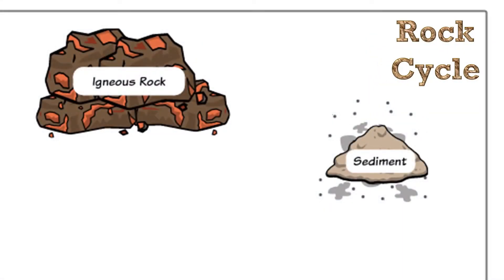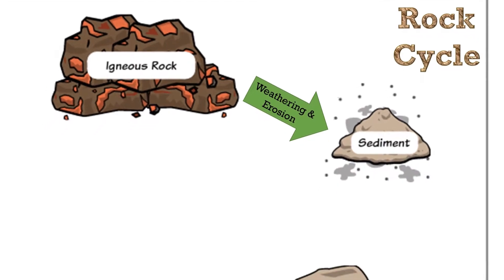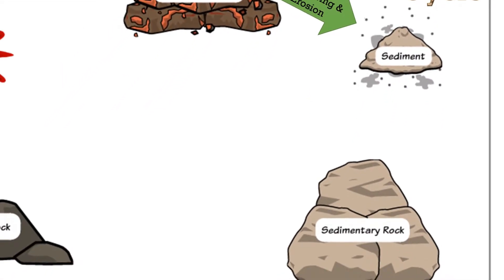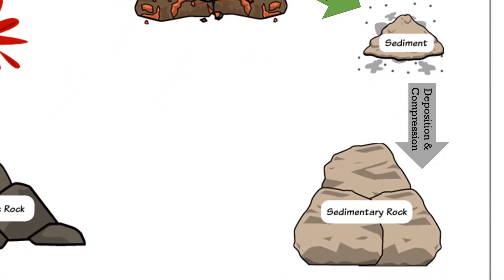Now, let us do a quick recap on what actually happened in the rock cycle. We will start from the igneous rocks, and after nature's process of weathering and erosion, they will be broken down into small pieces and fragments known as sediment. Then the sediment, after deposition and compression, will form into sedimentary rock.